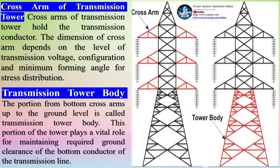The transmission tower body is the portion from the bottom crossarms up to the ground level. This portion of the tower plays a vital role in maintaining the required ground clearance of the bottom conductor of the transmission line.